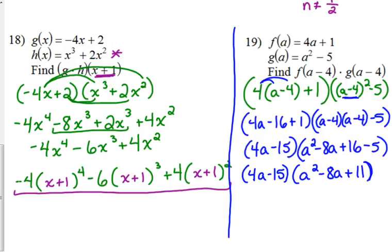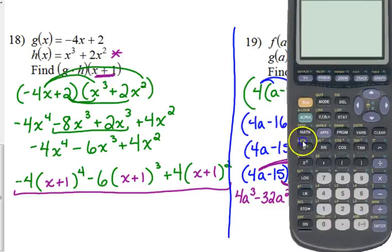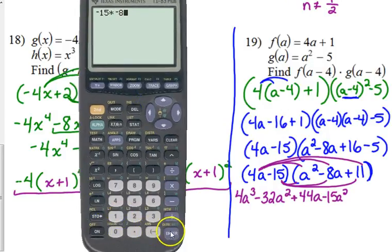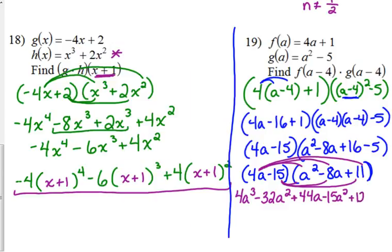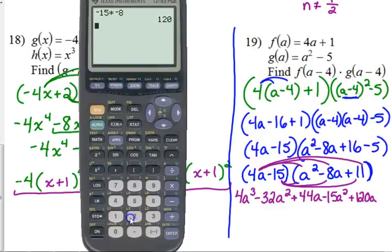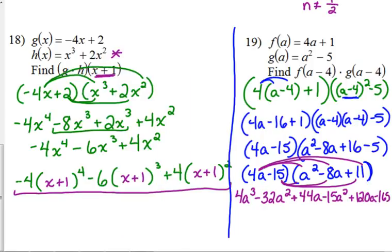Now we're finally at the point that we can do the multiplication. Do you all remember how we multiply binomial times trinomial? We've got to distribute the 4a to everything. So 4a times a squared is 4a cubed. 4a times negative 8a, negative 32a squared. 4a times 11a is 44a. Then we distribute the negative 15 to everything. Negative 15 times a squared, negative 15a squared. Negative 15 times 8. Don't want to mess that one up. Positive, because it was a negative times a negative. And then negative 15 times 11. Negative 165.